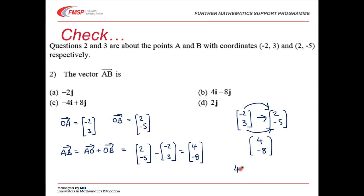Either way, I've got the vector four I minus eight J. Which is B. Notice that although the question was in terms of I and J, I prefer to work in column vectors. It always seems to me to be less writing. You can work whichever way you prefer, but do make sure that you give your answer in the same form as the question.